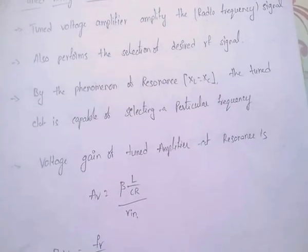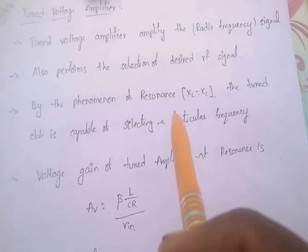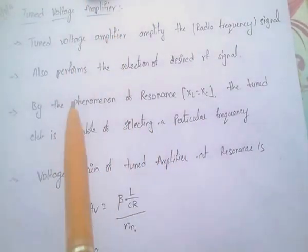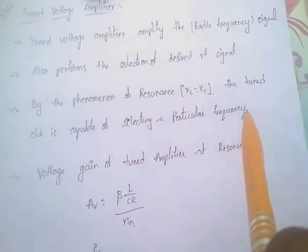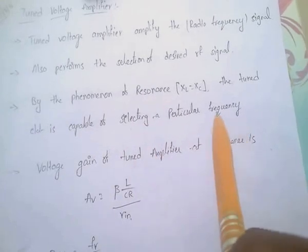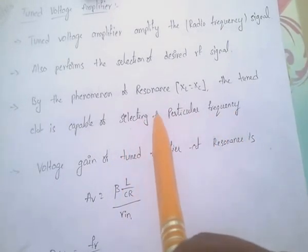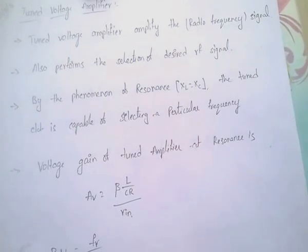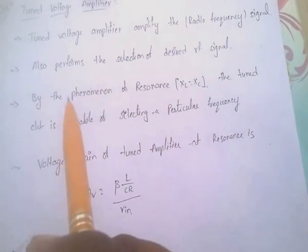By using the phenomenon of resonance, the tuned voltage amplifier is capable of selecting a particular frequency. The tuned circuit is capable of selecting a particular frequency. What is the phenomenon of resonance?